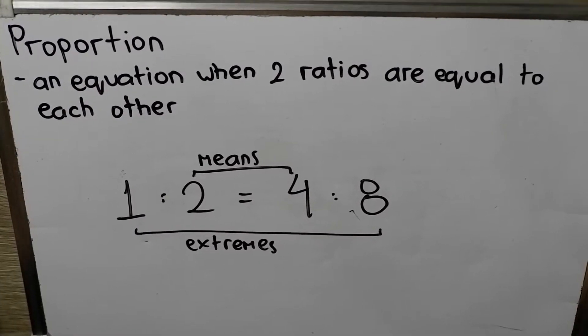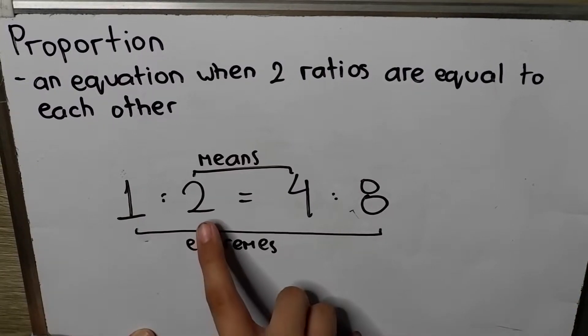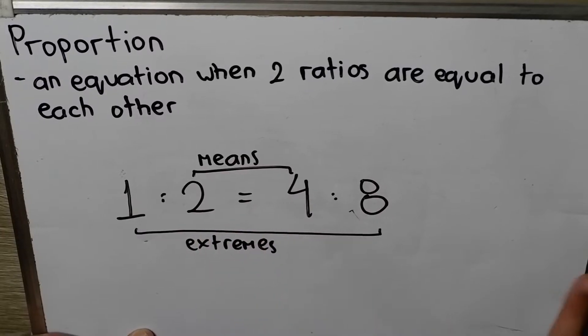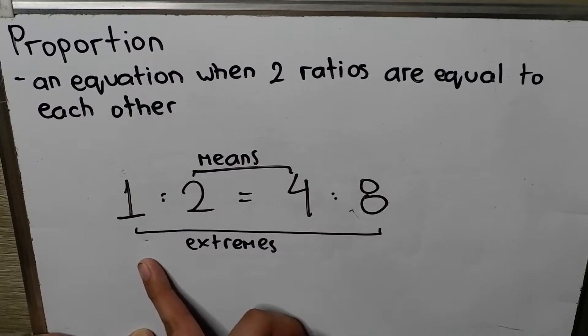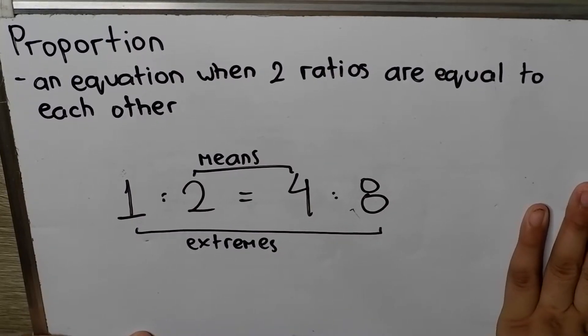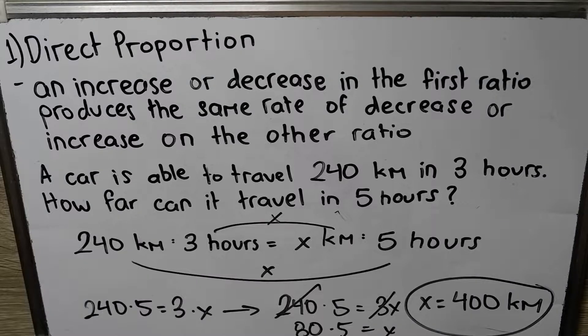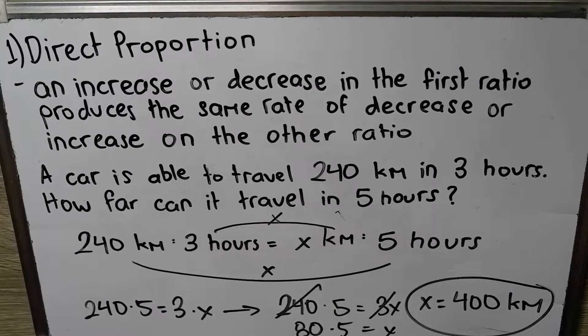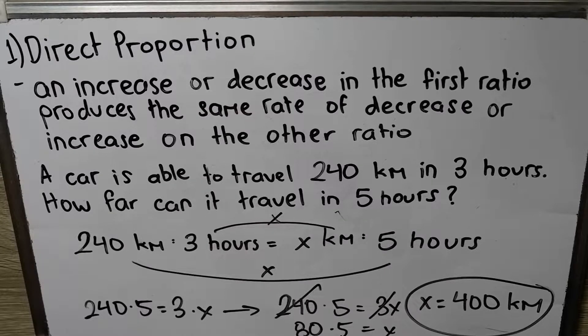The parts of a proportion are the means and the extremes. The means are those in the second and third number, and the first and the last number are the extremes. There are three types of proportion. The first one is direct proportion.